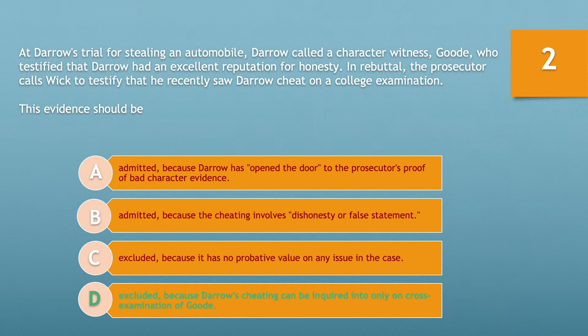However, the prosecutor may not call Wick to testify that he saw Darrow cheat because extrinsic evidence is inadmissible for impeachment by non-conviction misconduct that bears on truthfulness. Therefore, Wick's testimony should be excluded because Darrow's cheating can be inquired into only on cross-examination.